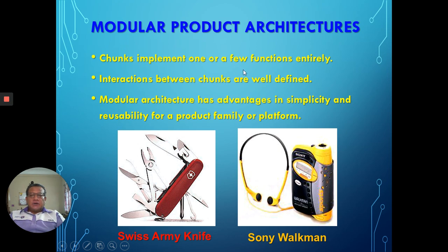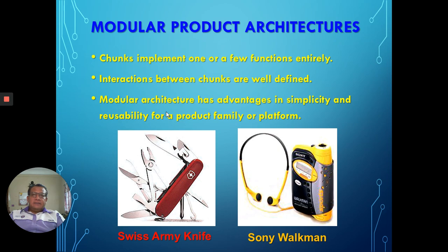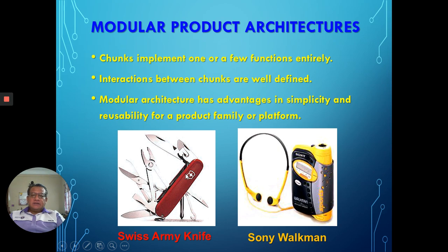Let's look at an actual product implementing modular product architecture. Modular product architecture means that chunks execute one or a few functions. Interaction between chunks is normally well-defined or visible from outside. Modular architecture has an advantage in physical assembly — it is simpler and can be reused across different model types on a single platform. A well-known example is the Swiss Army knife.